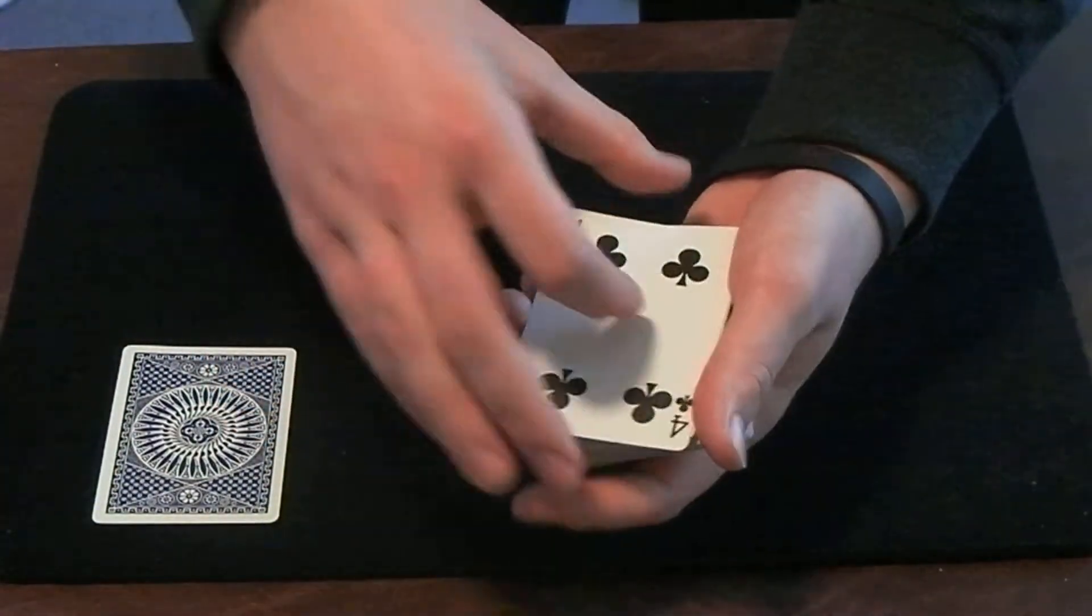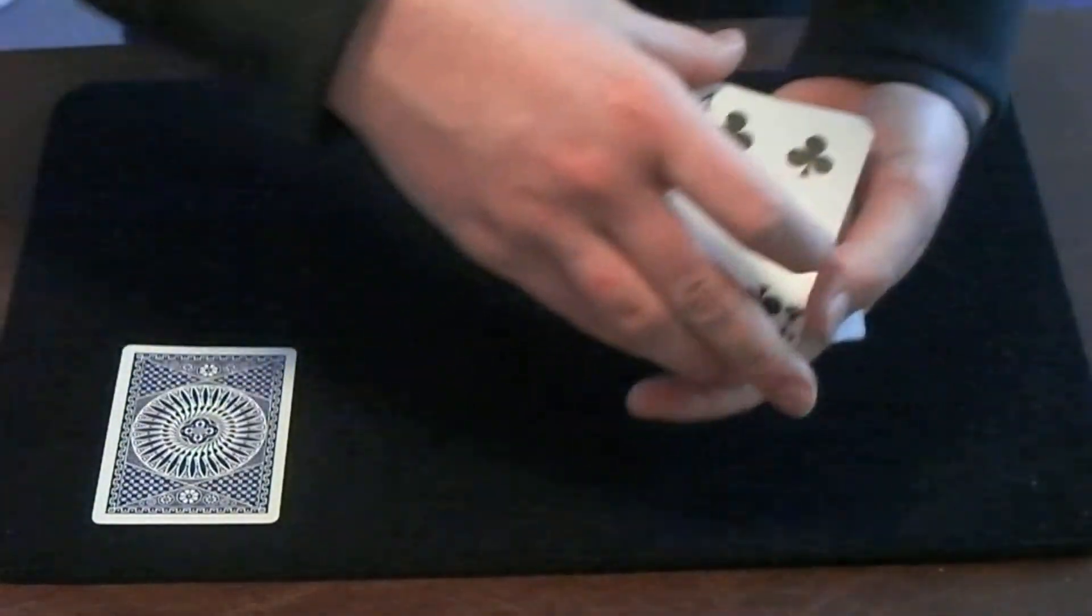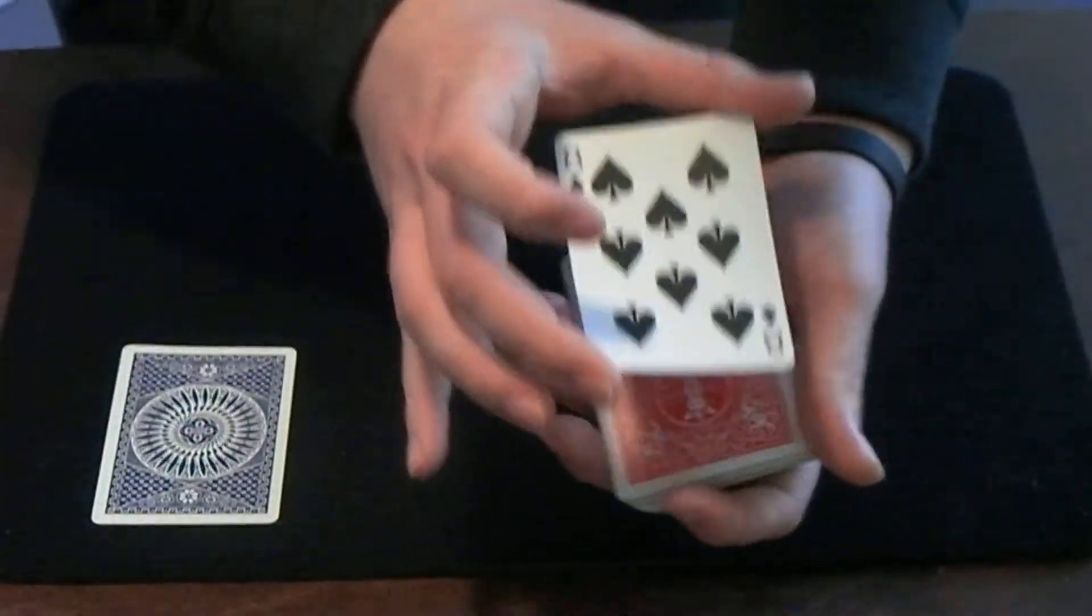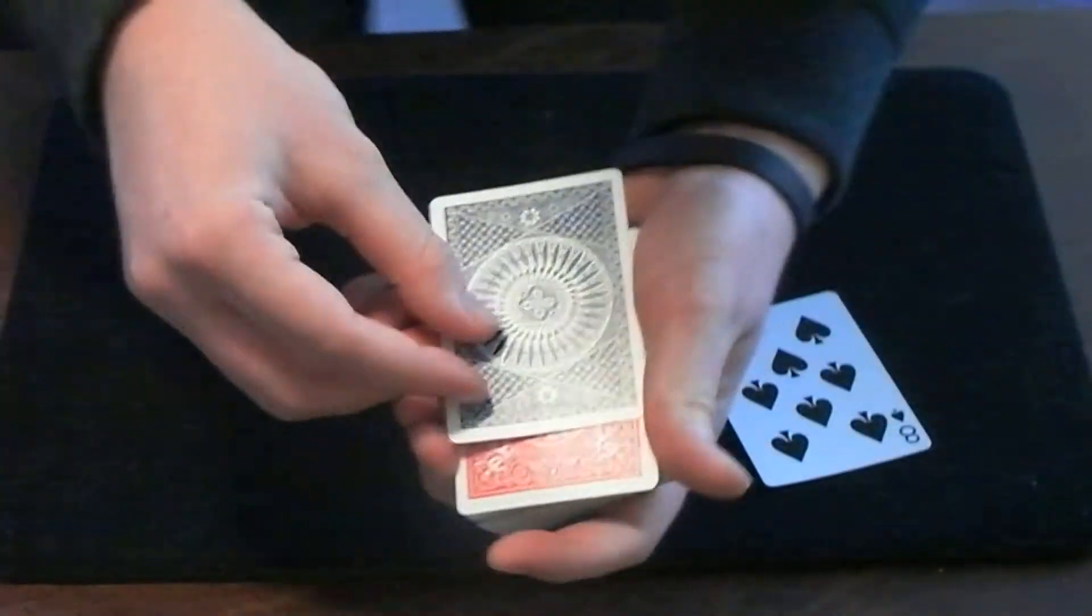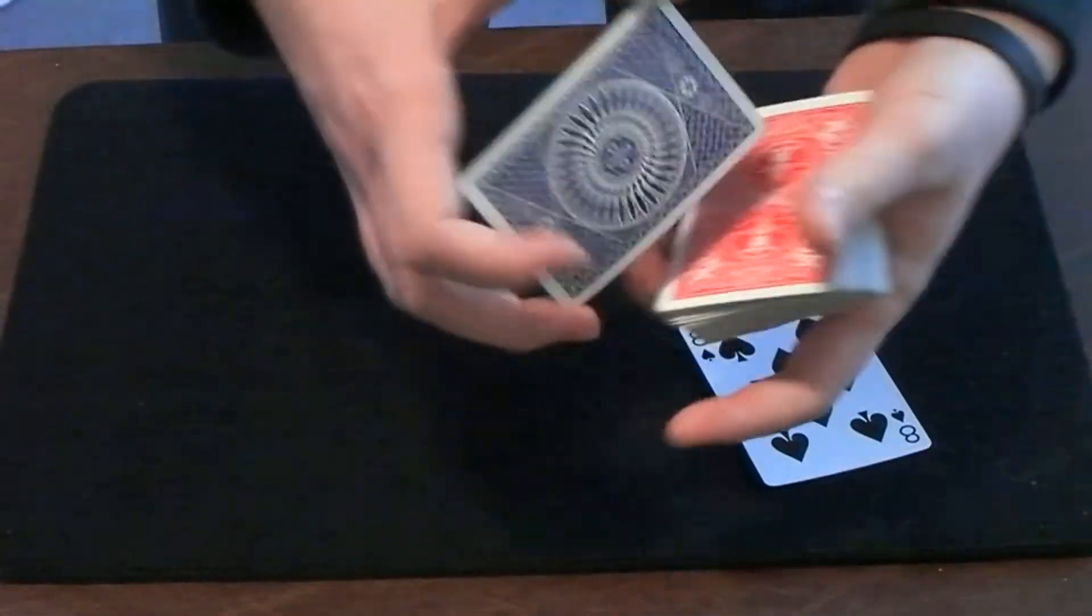Alright, now watch. I can take the four of spades, and if I give it a shake, it becomes the eight of spades in a red back. And the blue-backed card becomes the four of clubs, which I think is just awesome.